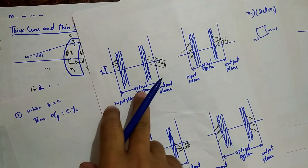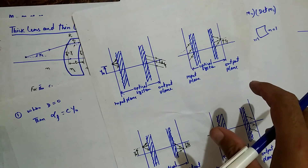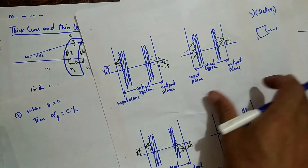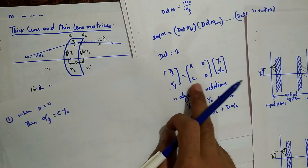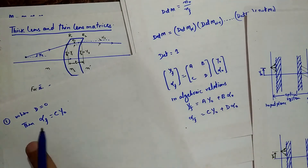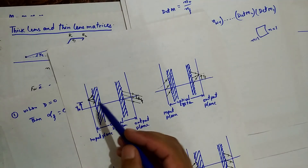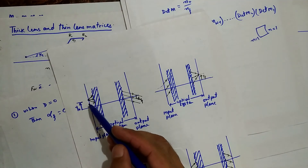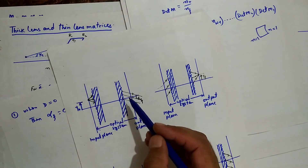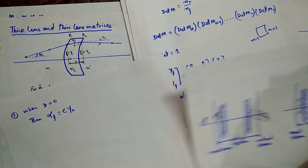When D = 0, any ray incident at the input plane at any angle with the optical axis will emerge at the same angle at the output plane. Case 2: when A = 0. Then yf = B·α₀, which is independent of y₀ — the height of the incident ray at the input plane.